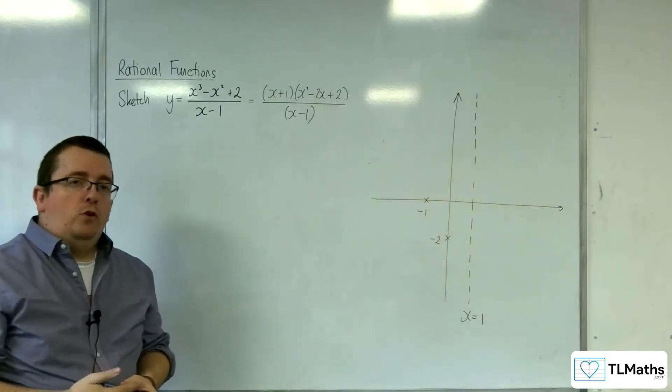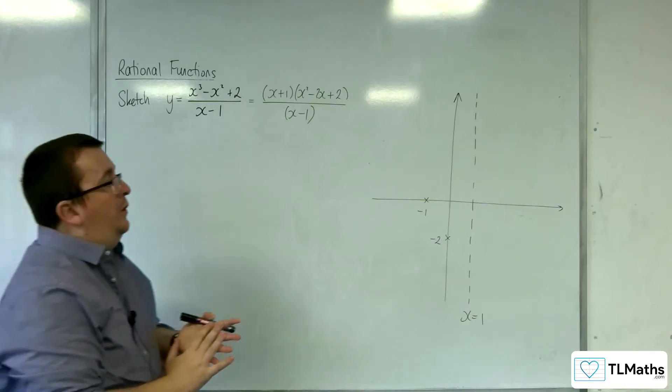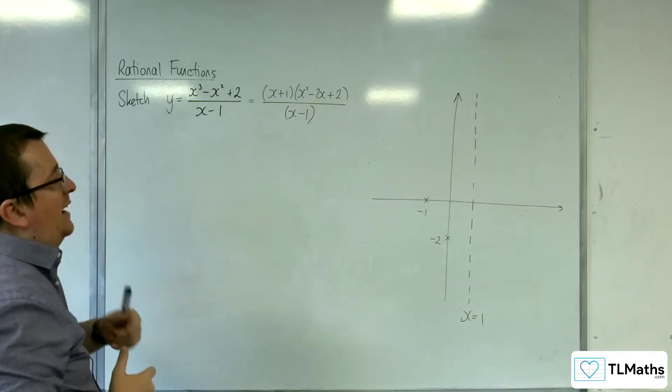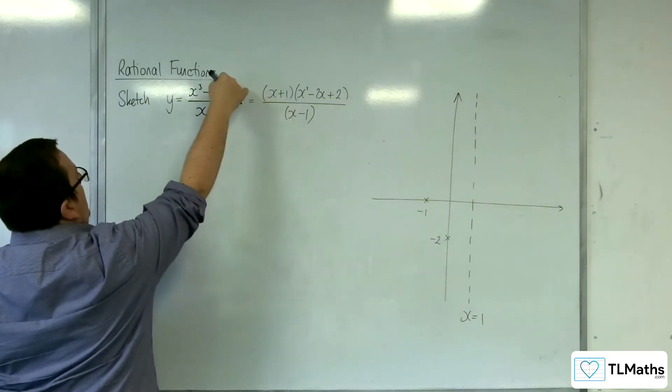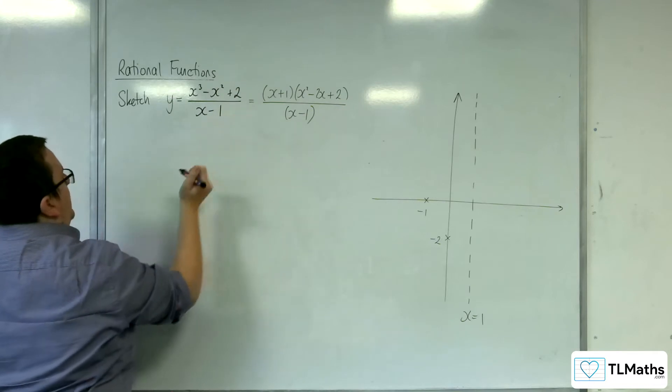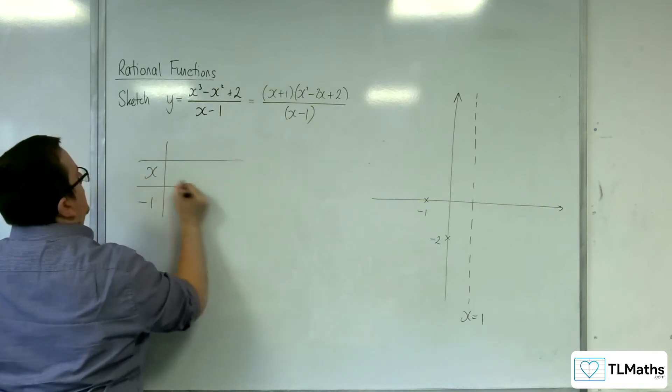And now we're looking for asymptotes, so oblique asymptotes or a curve linear asymptote. So I'm going to divide, polynomial divide, the numerator by the denominator.